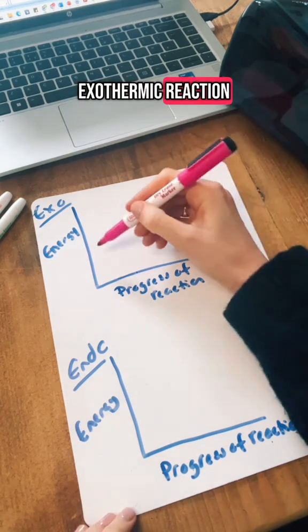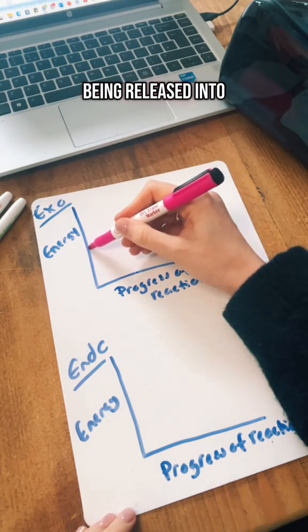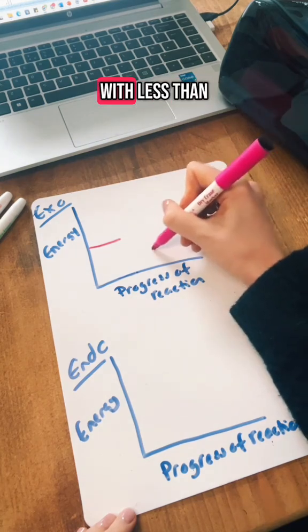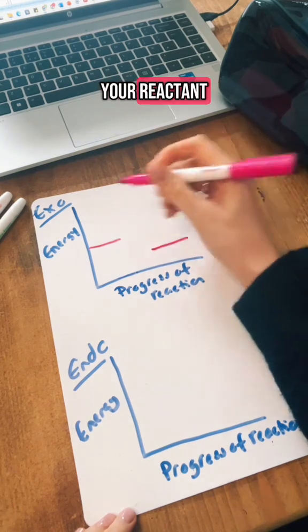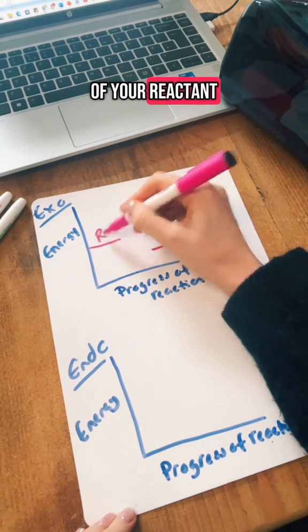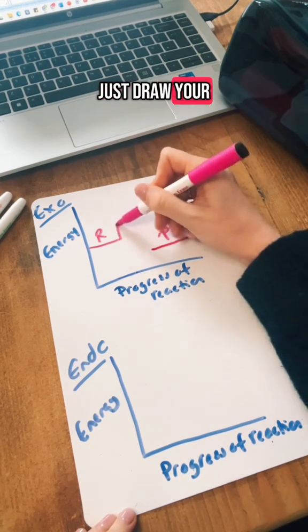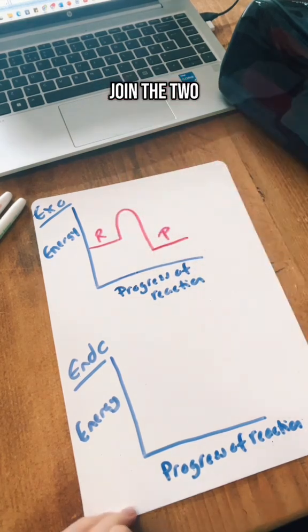So in an exothermic reaction, remember energy is being released into the surroundings, which means that your product is going to end up with less than your reactant. That's the energy of your reactant. Energy of the product will be lower, and then you just draw your curve line to join the two of them together.